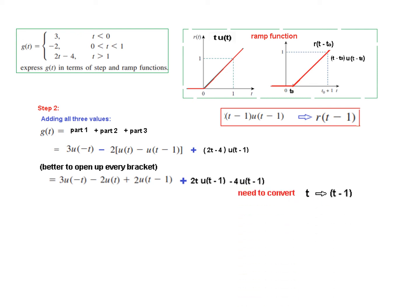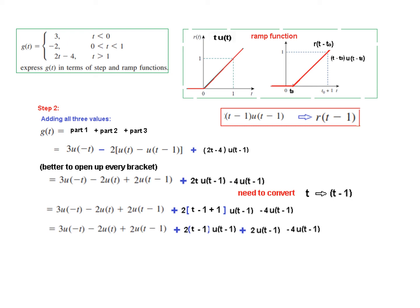To convert t into (t-1), we simply write t as (t-1) + 1, which keeps the value the same. We then separate into two terms: 2(t-1)·u(t-1) plus 2·u(t-1), and also -4·u(t-1). The term 2(t-1)·u(t-1) is the ramp form, so it becomes 2r(t-1). The remaining +2·u(t-1) and -4·u(t-1) combine to give -2·u(t-1), which cancels with another term.